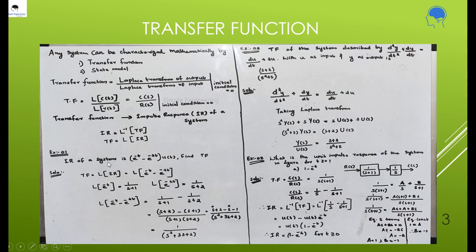Let us check one example. The impulse response of a system is given as e^(-t) minus e^(-2t) into u(t). You have to find the transfer function of this system. Transfer function we know that it is Laplace transform of output by Laplace transform of input.